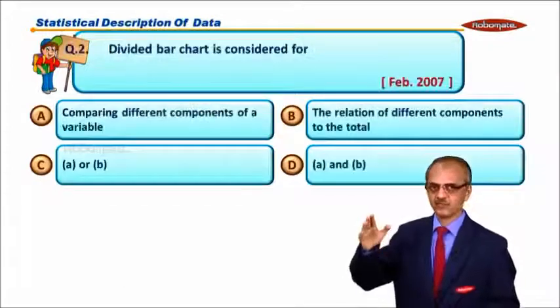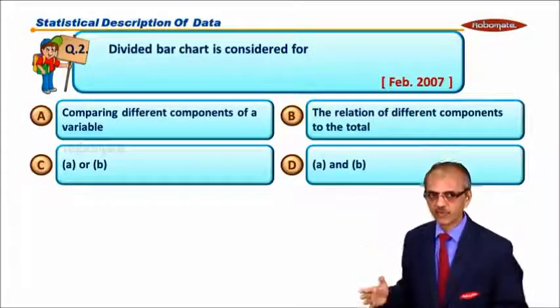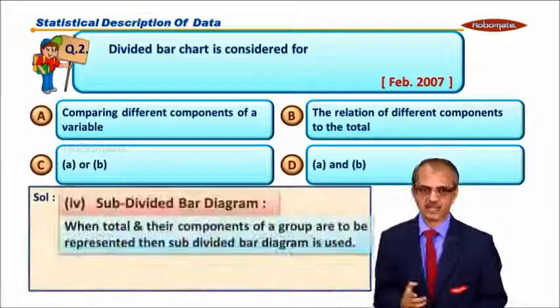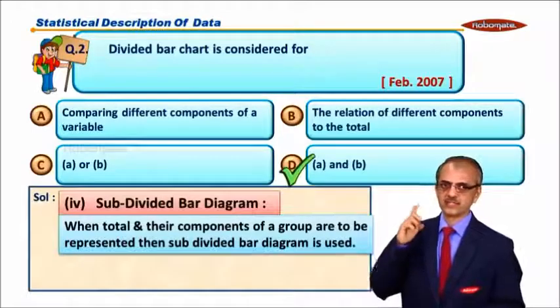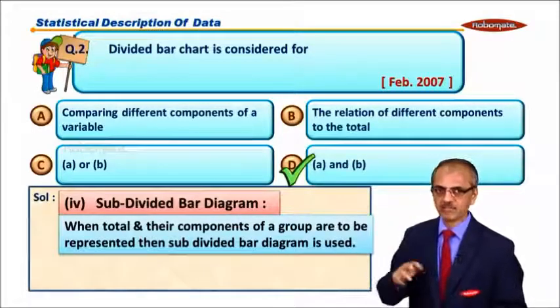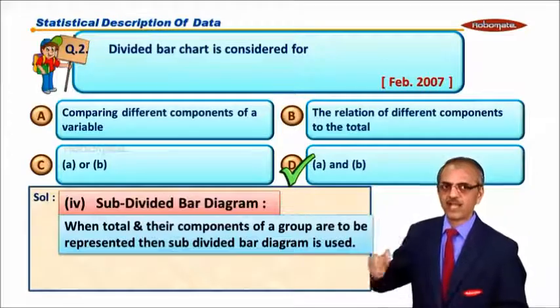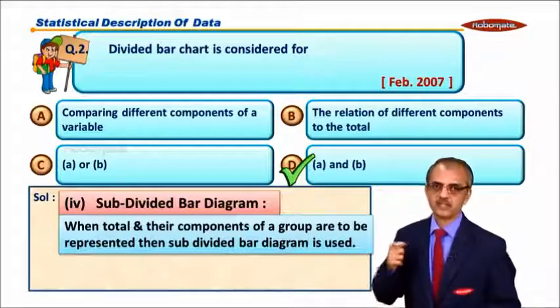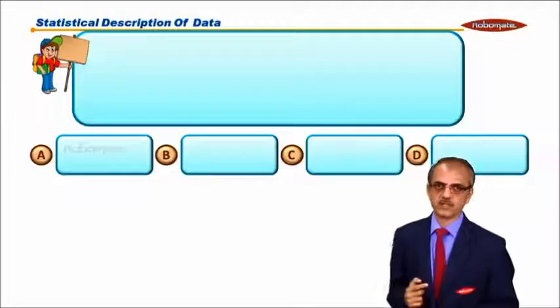The second one: the divided bar chart is considered for what? Yes, just recap that. The answer is D, A and B - comparing the different components of a variable and the relation of different components to the total. That is the main concept for the divided bar chart.